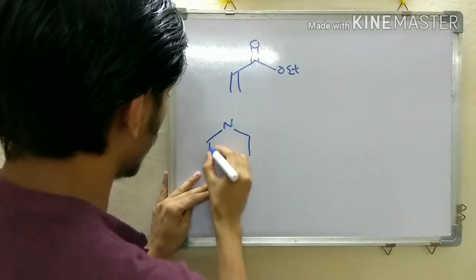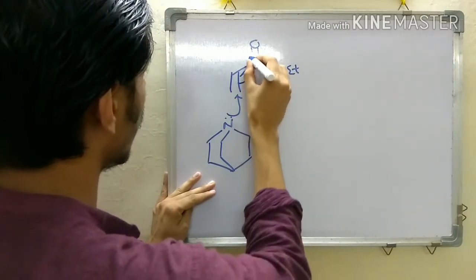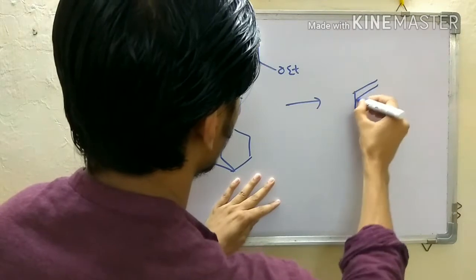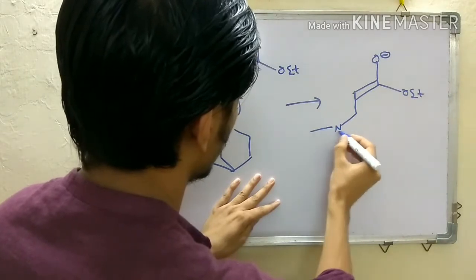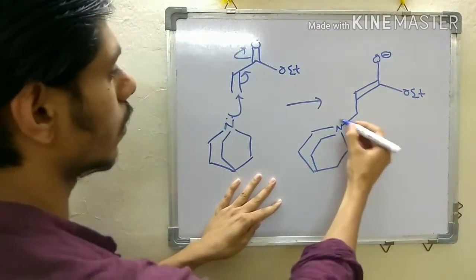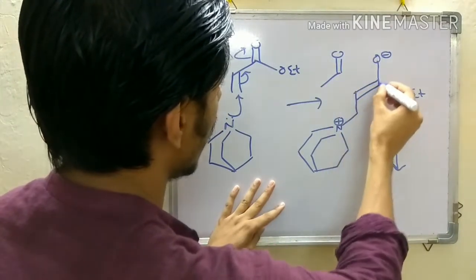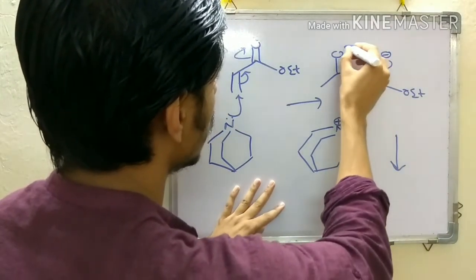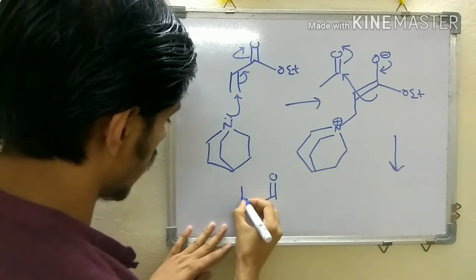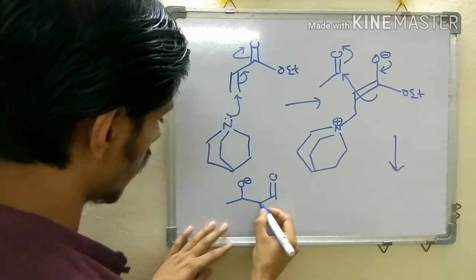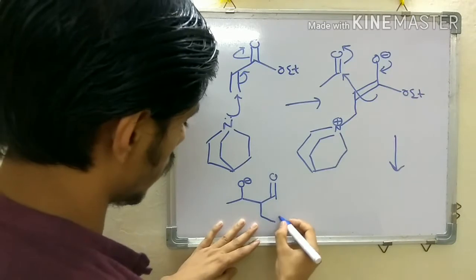DABCO attacks ethyl acrylate in a 1,4-manner, generating an enolate. Acetaldehyde is also present in the medium, and this enolate attacks the acetaldehyde to give the next intermediate.